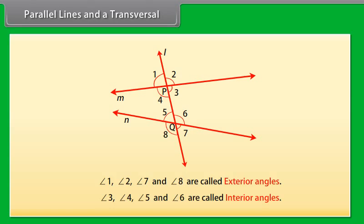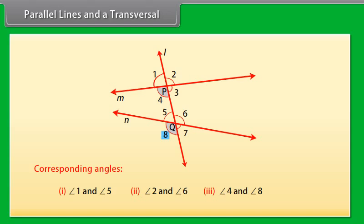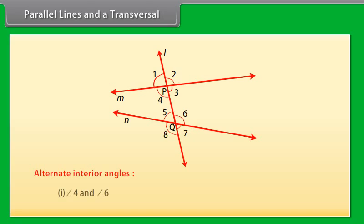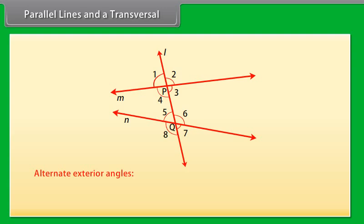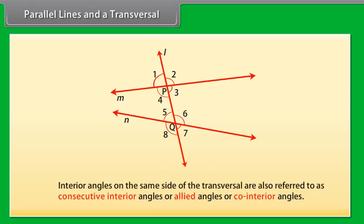When a transversal intersects two lines, we get some pairs of angles. First are corresponding angles: angle 1 and angle 5, angle 2 and angle 6, angle 4 and angle 8, angle 3 and angle 7. Second are alternate interior angles: angle 4 and angle 6, angle 3 and angle 5. Then alternate exterior angles: angle 1 and angle 7, angle 2 and angle 8. Next are interior angles on the same side of the transversal: angle 4 and angle 5, angle 3 and angle 6. These are also referred to as consecutive interior angles, allied angles, or co-interior angles.